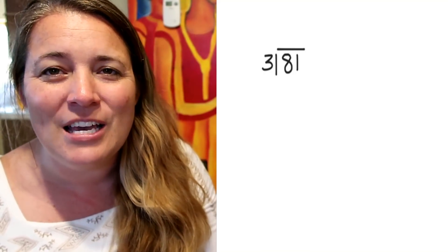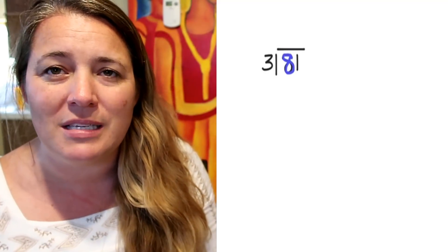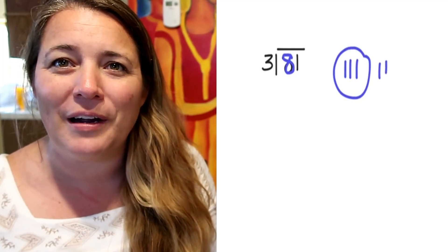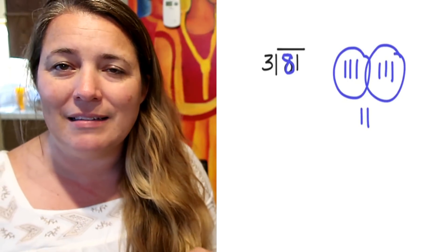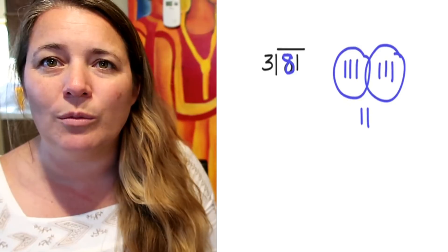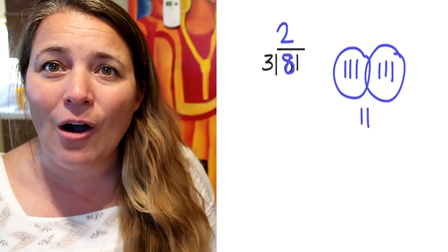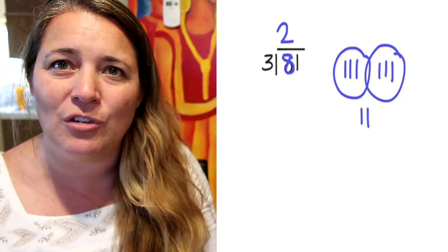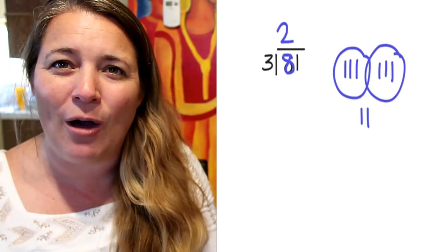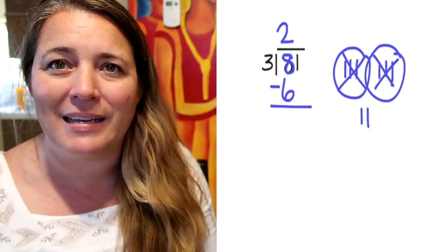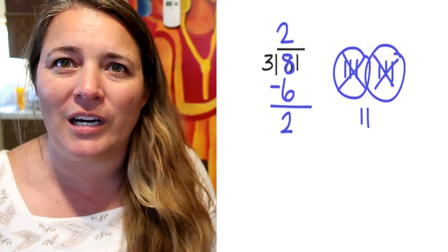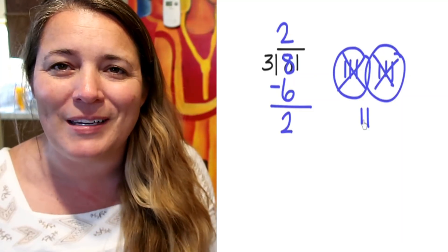The first part is the 8, so we draw 8 sticks to the side — remember, every 3 sticks is a group. 1, 2, 3 — make a group. 4, 5, 6 — make a group. 7, 8 — I don't have enough to make another group, but that's okay. I can see that I have 2 groups with 2 left over. Above the 8, we write 2 groups, and we take those 2 groups away: 3, 6 — subtract 6. 8 minus 6 is 2, which matches my picture.